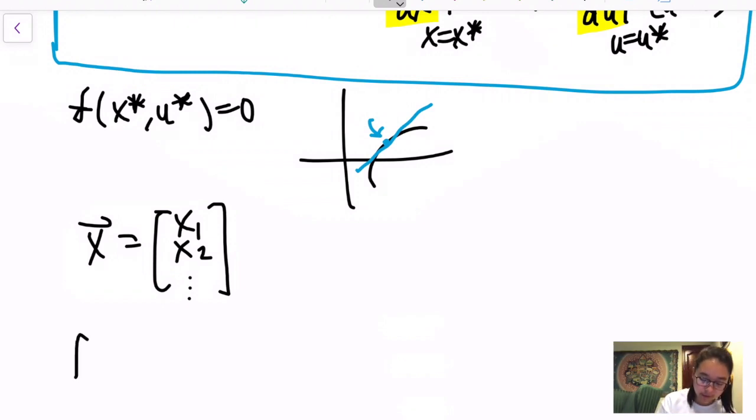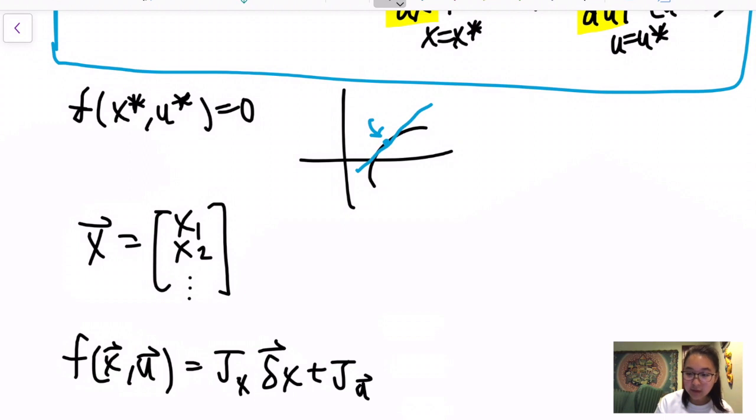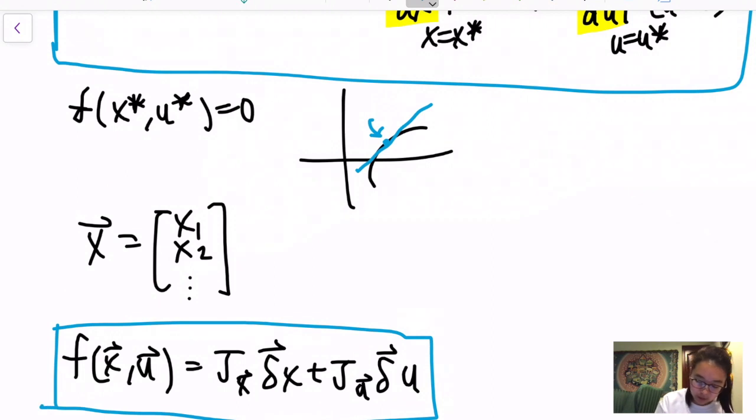Instead we'll actually get into the form of f(x,u). Assuming that they are both vectors will then be equal to the Jacobian of delta x and then the Jacobian in respect to u of delta u. So this is when it's a system, there are vectors, multidimensional.